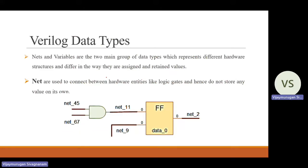In Verilog data types, nets and variables are the two main groups. The data types are classified into two types: one is called net and another one is called variables. These represent different hardware structures and differ in the way they are assigned and retain values.